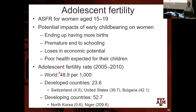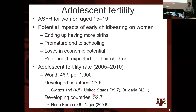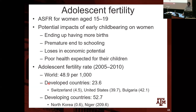The adolescent fertility rate, using data from 2005 to 2010, varies a lot across countries. Overall, around 48.9 women per 1,000 between ages 15 and 19 had children in this period worldwide. In developed countries the rate is lower and in developing countries it's higher, but even within developed countries there is a lot of variation. In Switzerland, only 4.5 births per 1,000 women in this age range; in the US, 39.7 births per 1,000 — much higher than Switzerland. Bulgaria had 42.1.